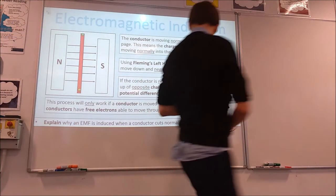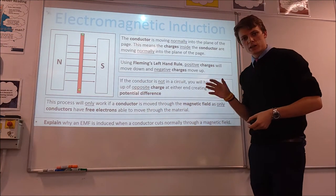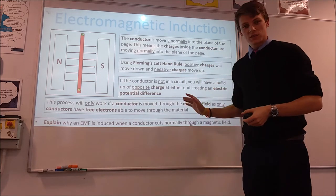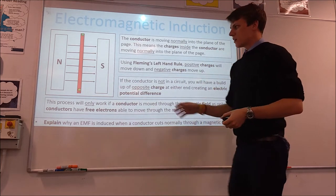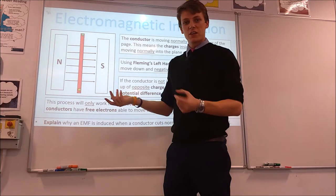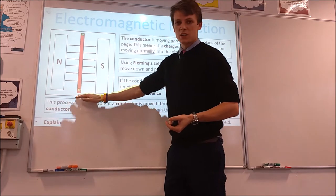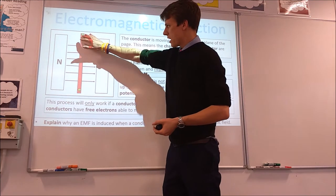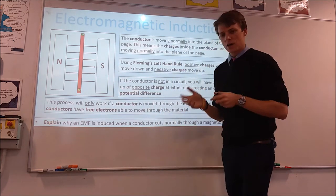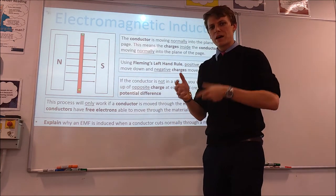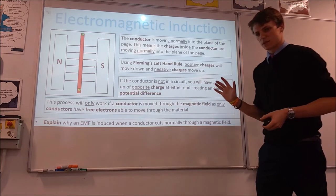If the wire is not in a complete circuit, that's all that's going to happen, because the charges are going to get to the end and then they can't go anywhere. So you're going to get a build-up of positive charge at one end and a build-up of negative charge at the other. We'll talk about what limits that build-up in a moment.